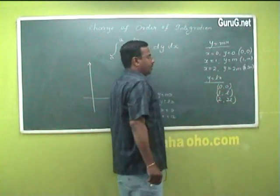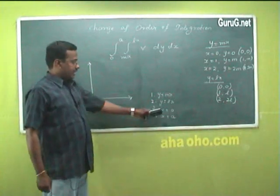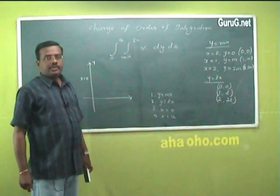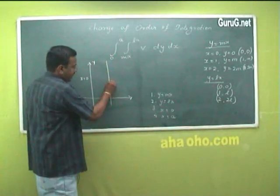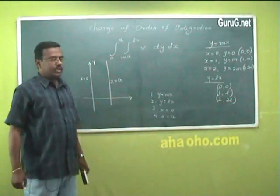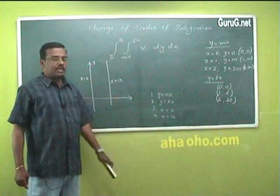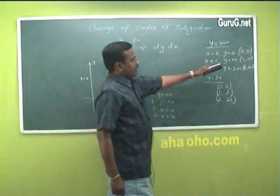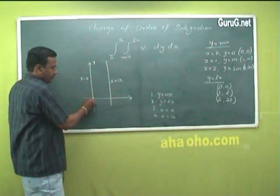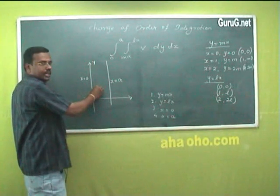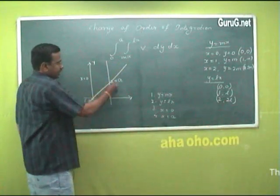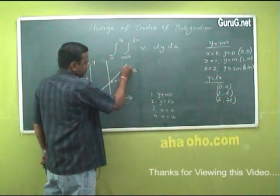x = 0 is our y-axis and x = a is a straight line parallel to the y-axis. Now, y = mx is a straight line that passes through the origin and through points (1, m), (2, 2m), (3, 3m), (4, 4m), etc. Similarly, y = lx is another straight line passing through (0, 0). These two lines y = mx and y = lx both pass through the line x = a.